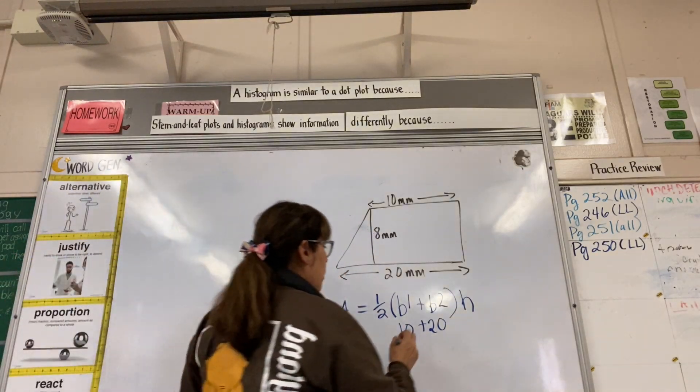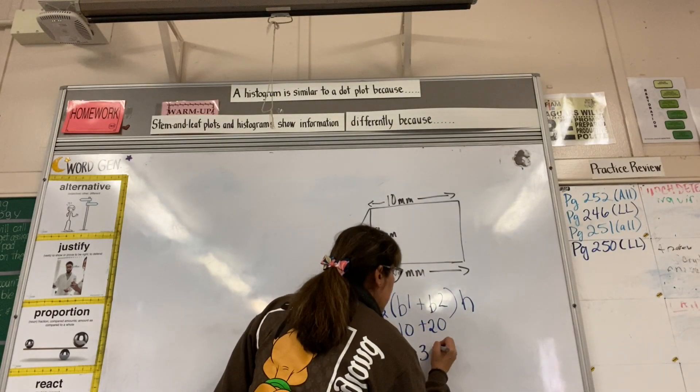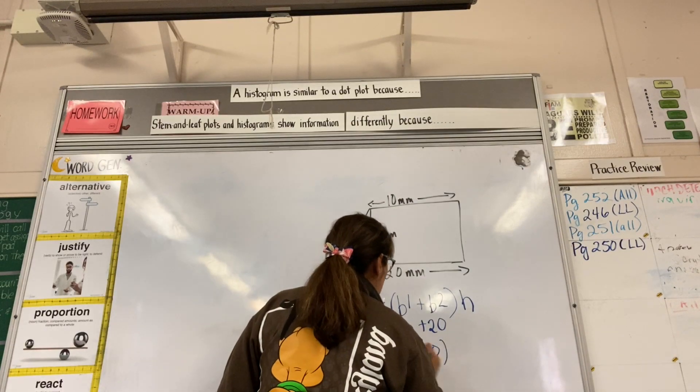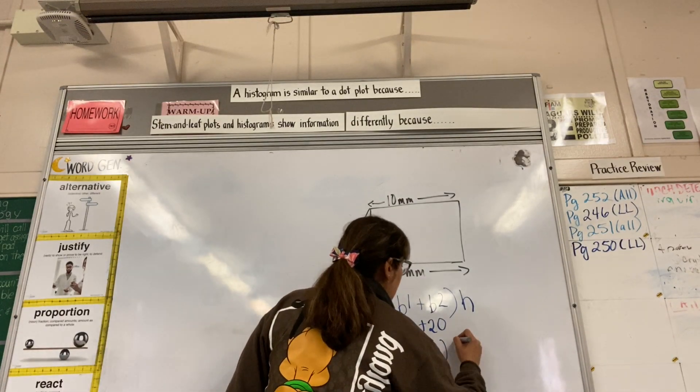Now we know we're solving the inside. That's 30 right there, and they're asking us half that times the height.